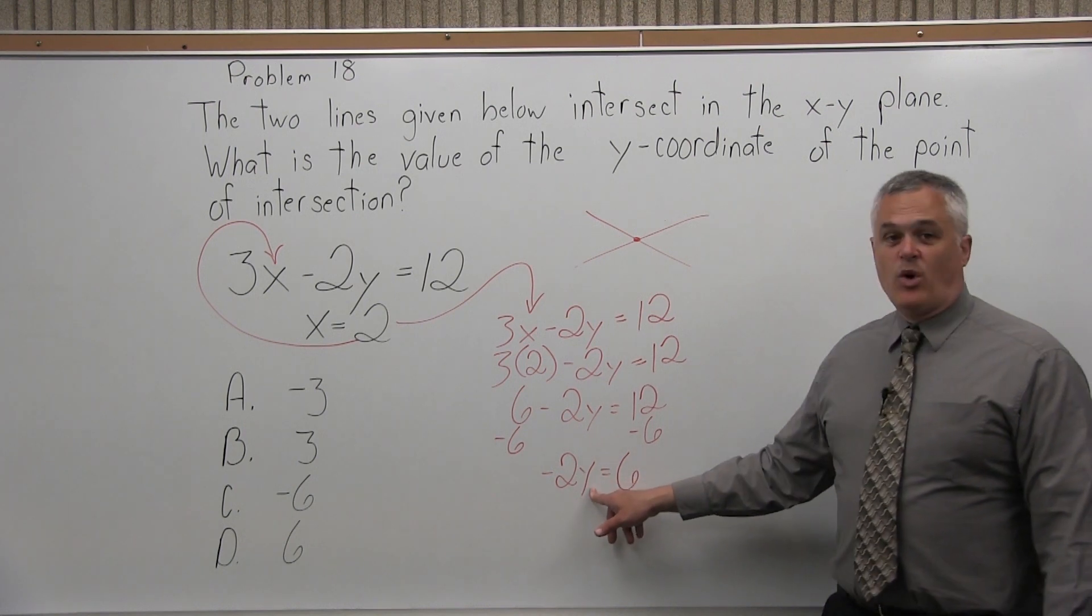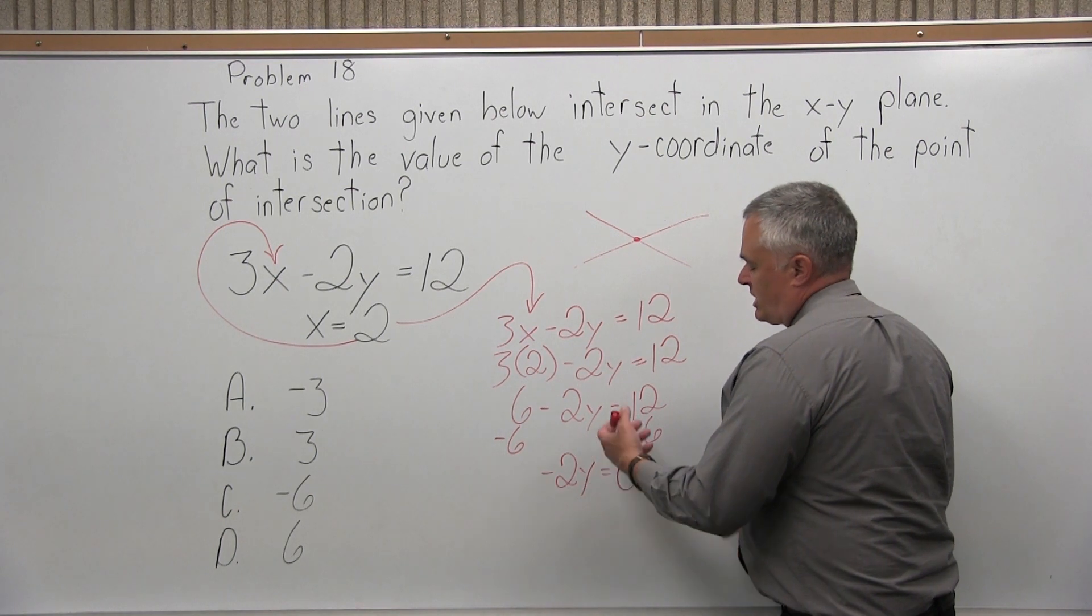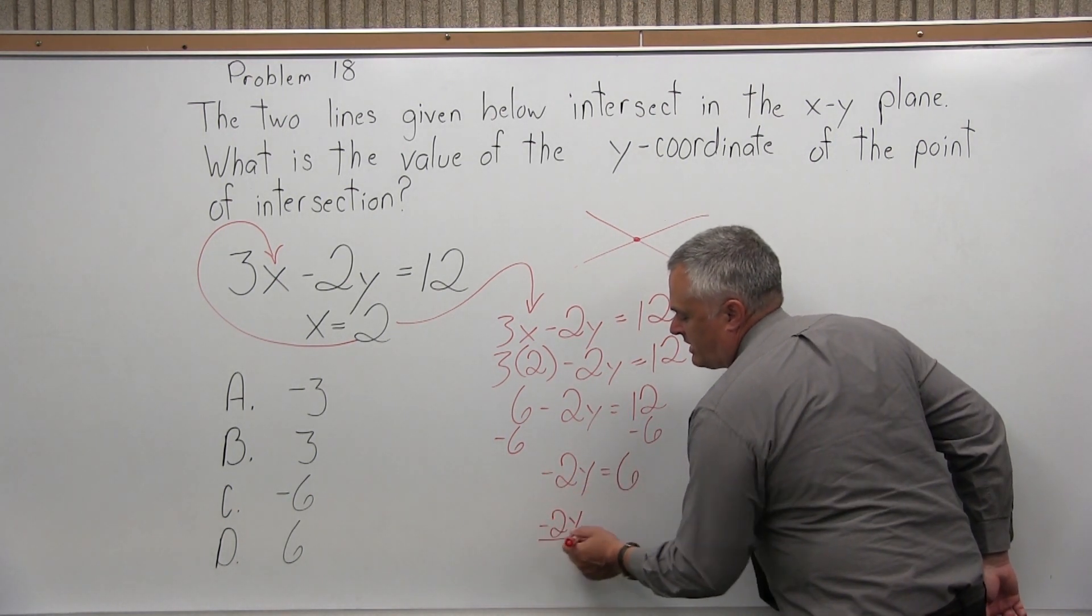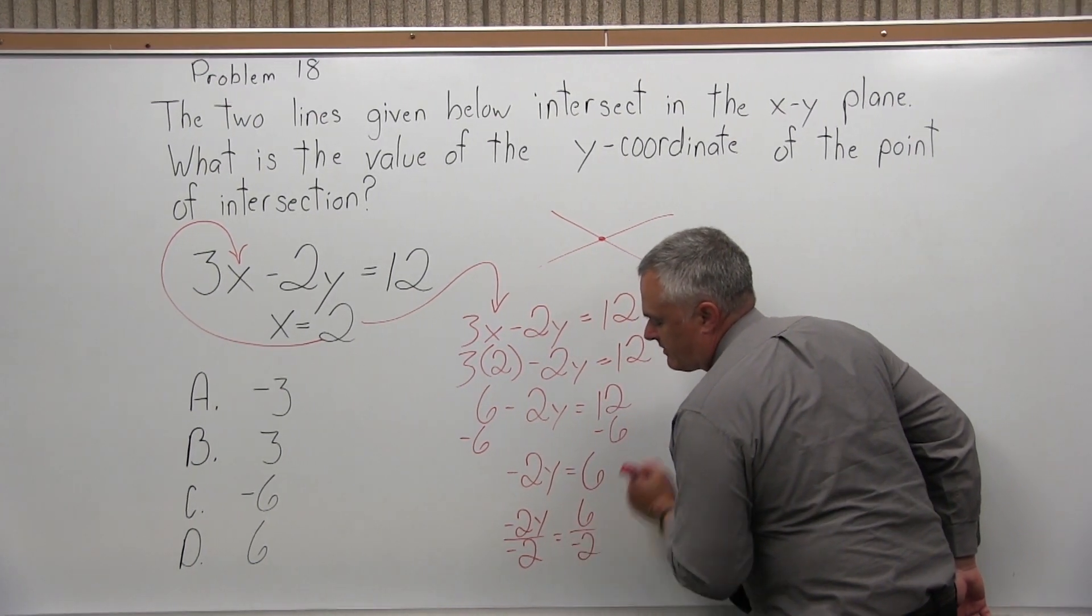Now I want what y equals, not what negative 2y equals. So I want to divide away the negative 2. I have an equation. I can do anything I want as long as I do the same on both sides.